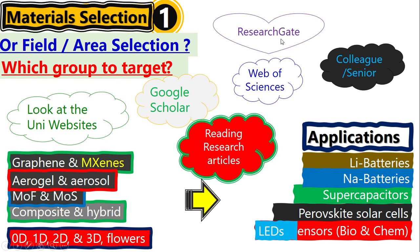Similarly, ResearchGate also helps you, and Web of Science is also very important in order to know about the field and about material selection — all these things.